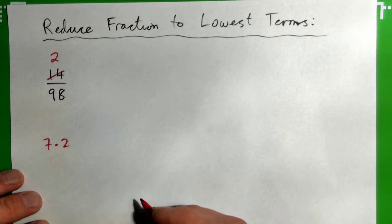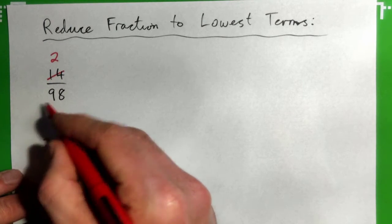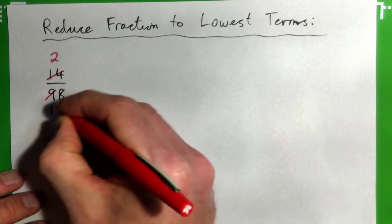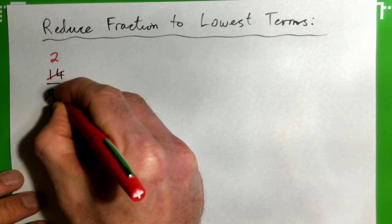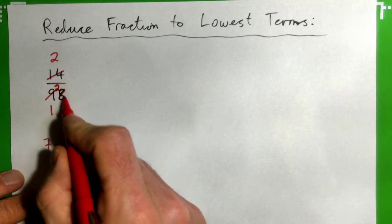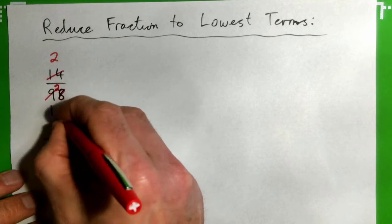And 98, you can go, what's this trick? 7 into 9 goes one time, remainder 2, put the 2 here, see that? And 7 into 28 then, 7 into 28 goes 4 times. So this whole thing becomes 2 over 14.